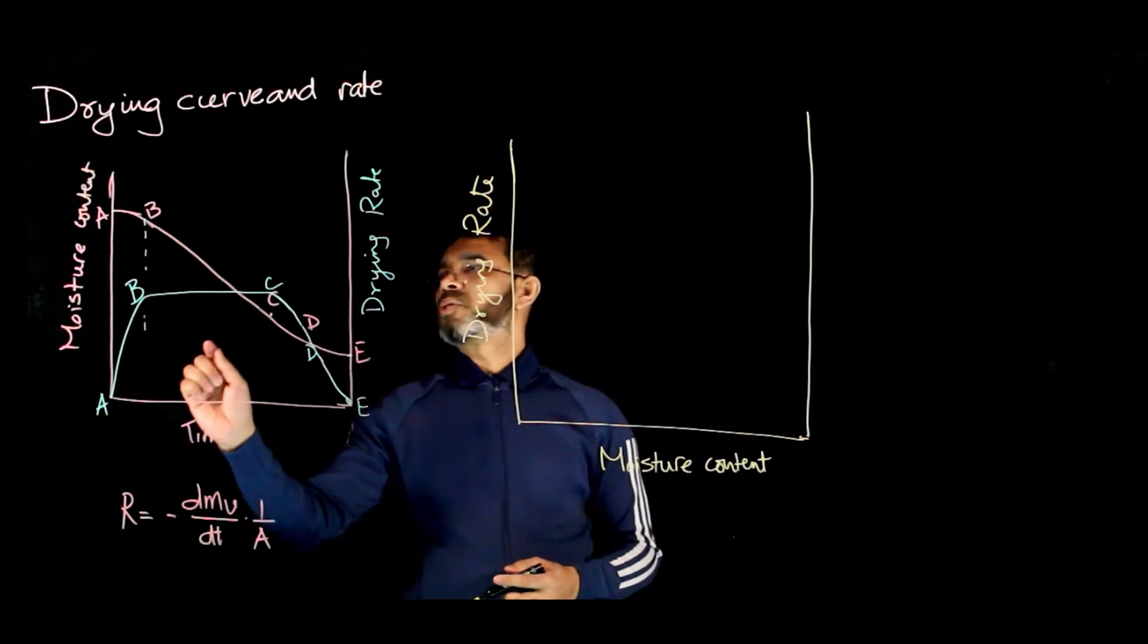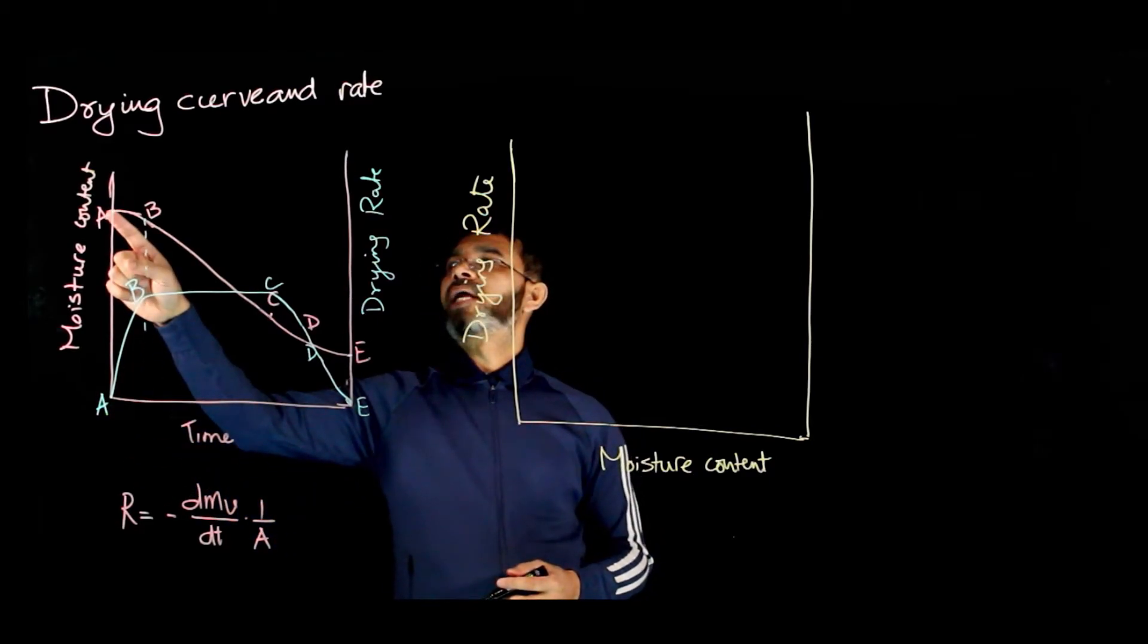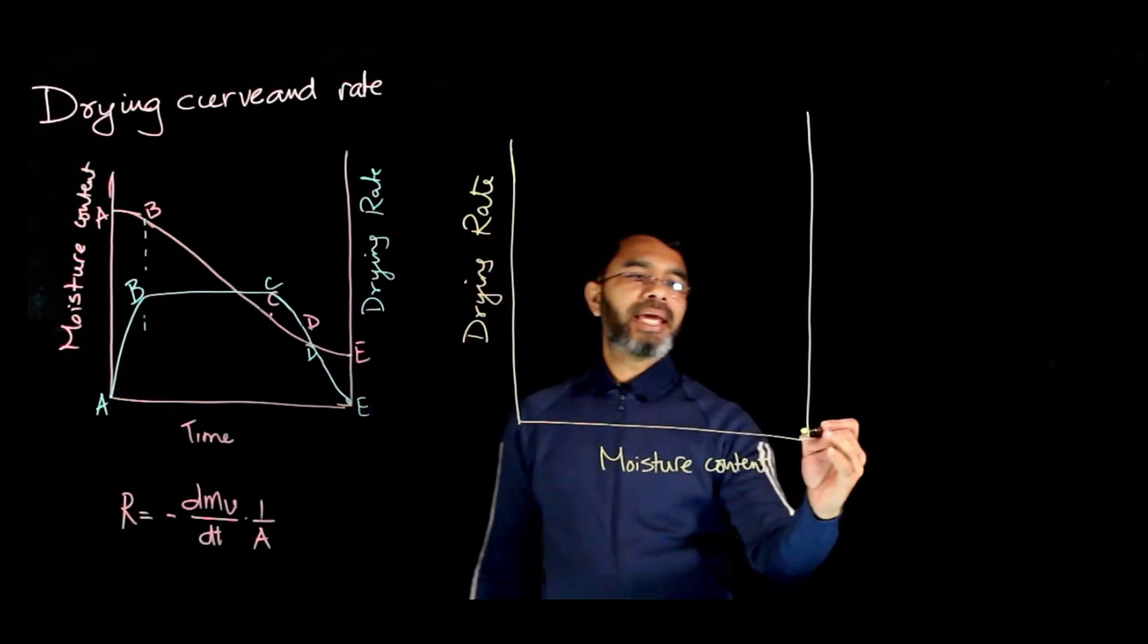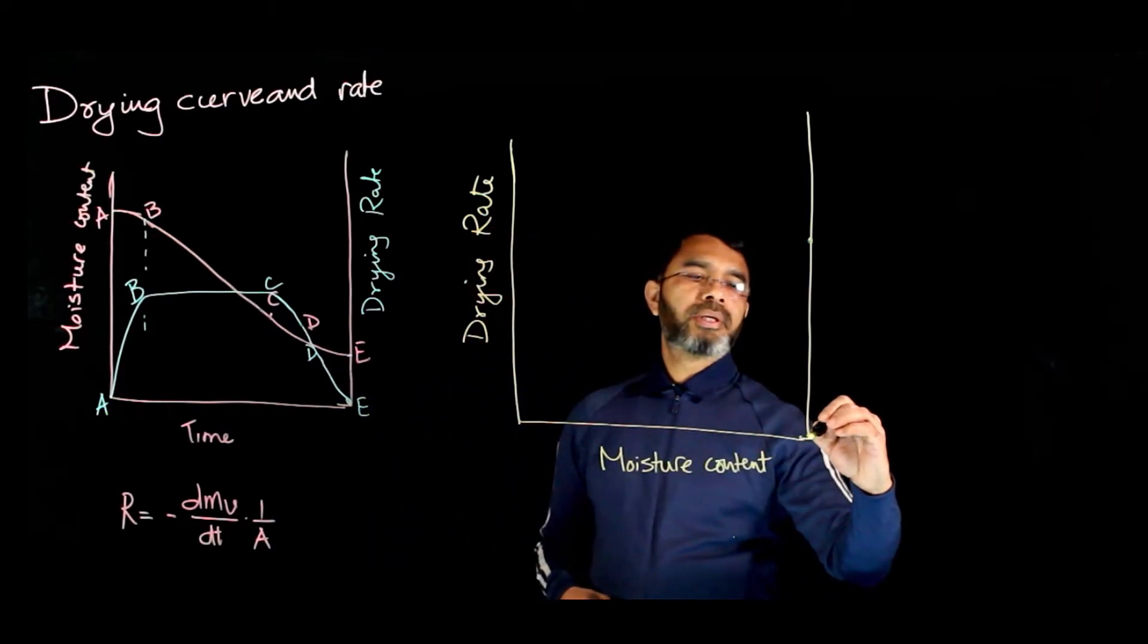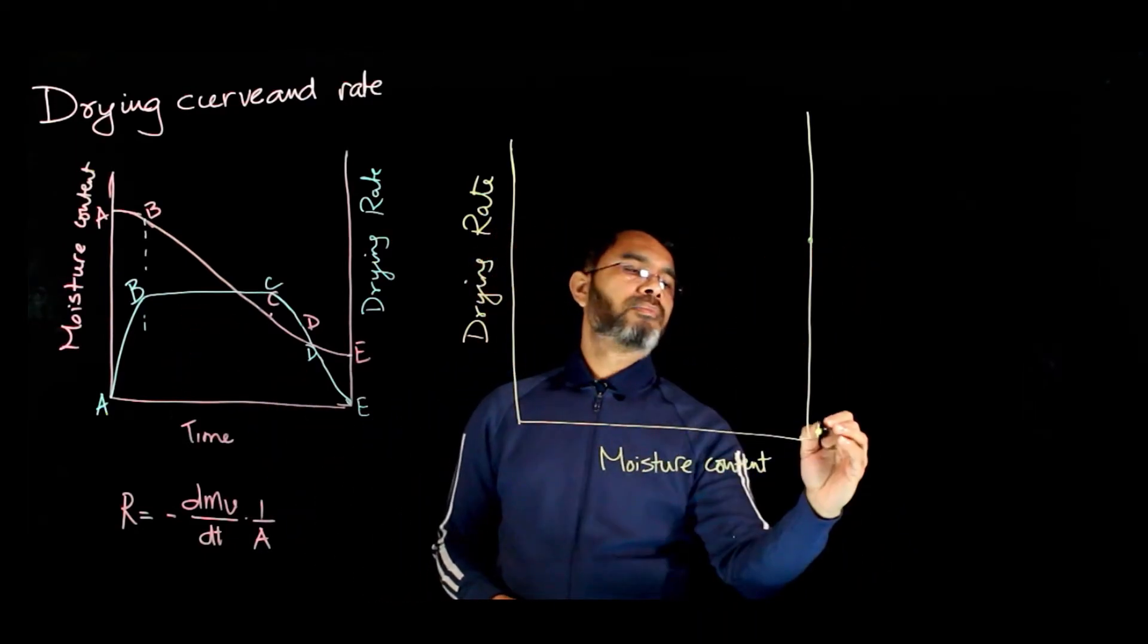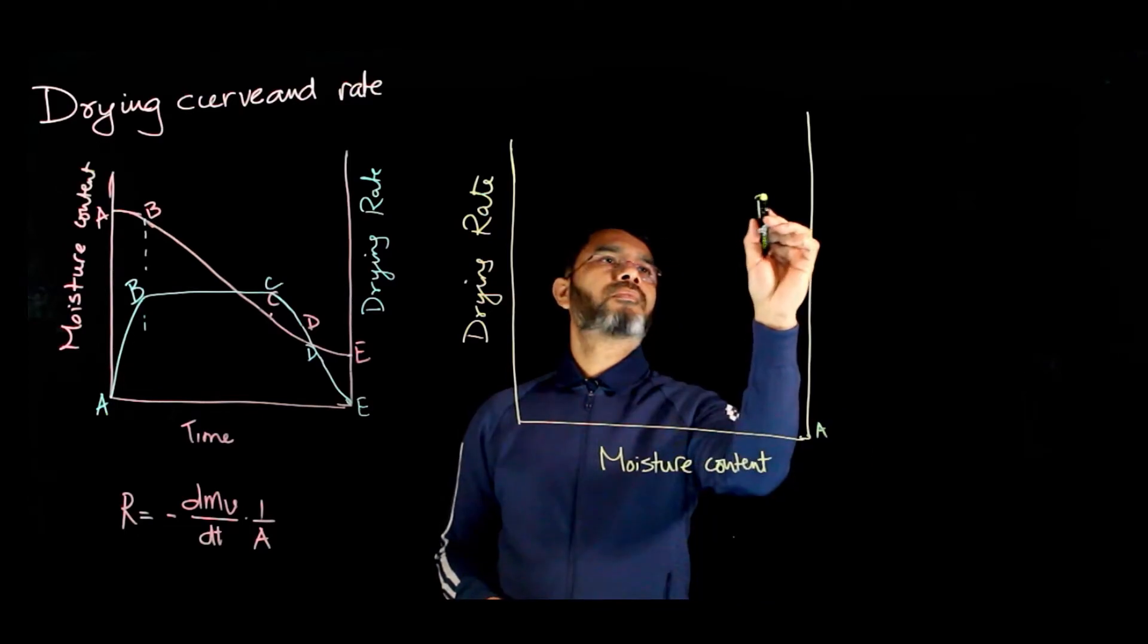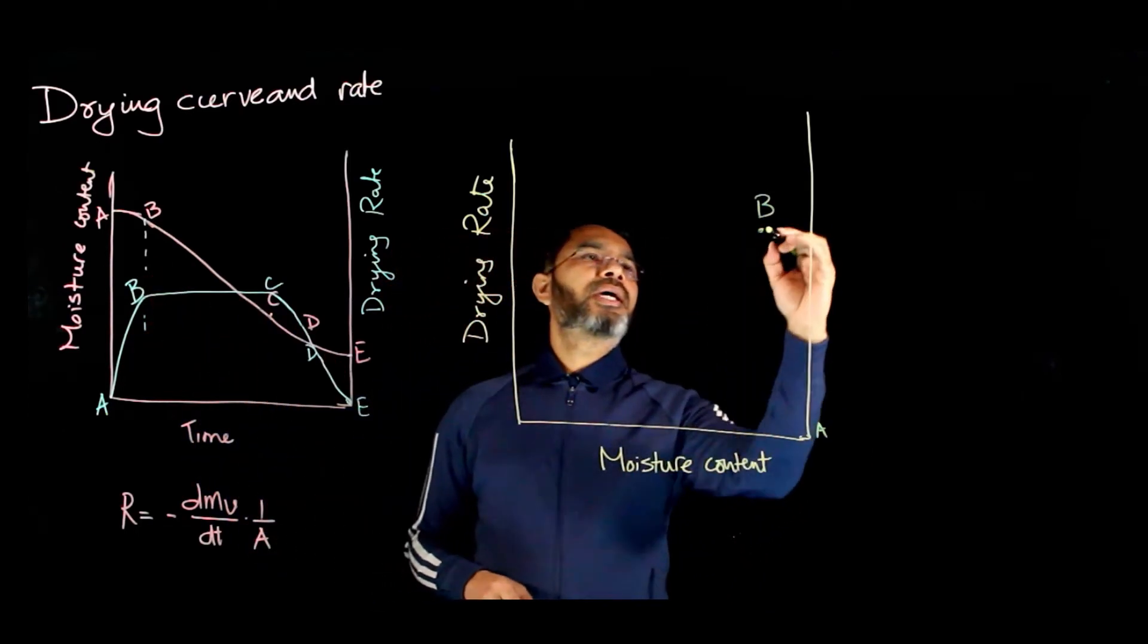For this case, point A is where the moisture content is maximum. Point A is on this line where the drying rate is zero. Point B is the constant drying period. For a very short time, there is this curve.